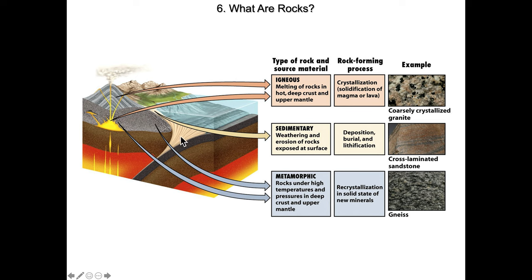The result could be a cross-laminated sandstone. In this case the sand grains were organized either by wind or water — from the looks of this, most likely water — and eventually cement grew between the grains, fusing them together into this cross-laminated sandstone.